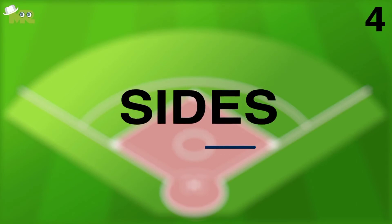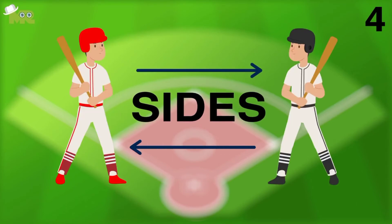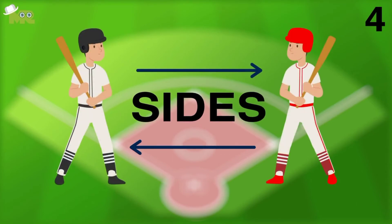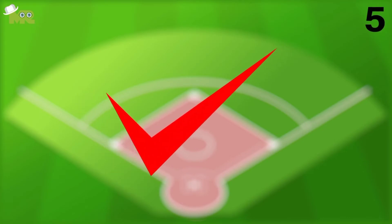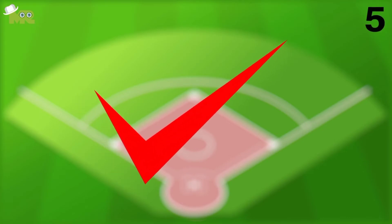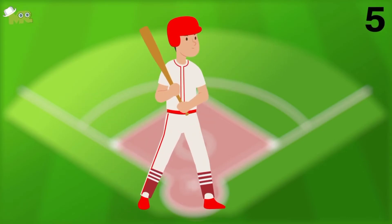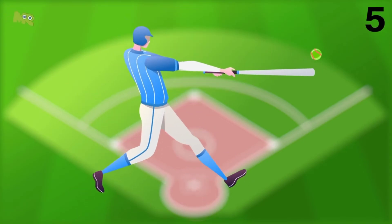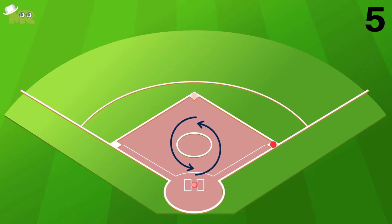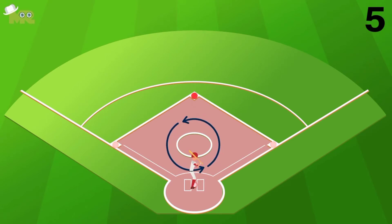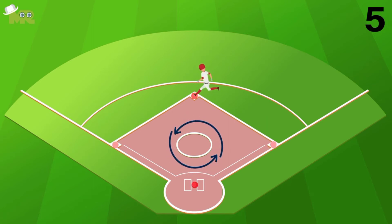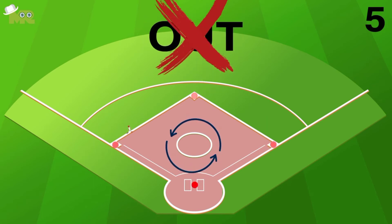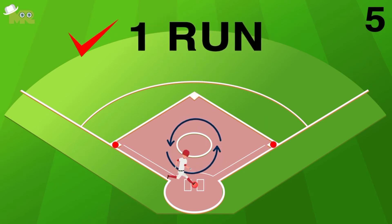Rule 4: The sides switch after each team has batted once in each inning. Rule 5: It is necessary for the batter to successfully strike the ball and run around as many bases as possible. Once they get all the way around and back to the home plate without being given an out, a run is scored.